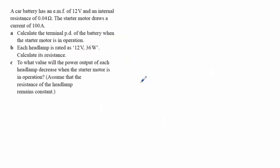Let's have a go at working through this question. So a car battery has an EMF of 12 volts and an internal resistance of 0.04 ohms. The starter motor draws a current of 100 amps. Now the first part of this says to calculate the terminal PD of the battery when that starter motor is running.